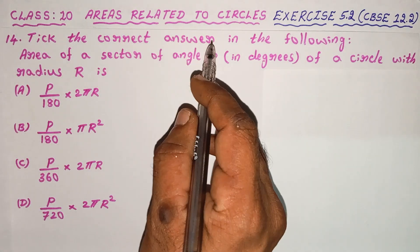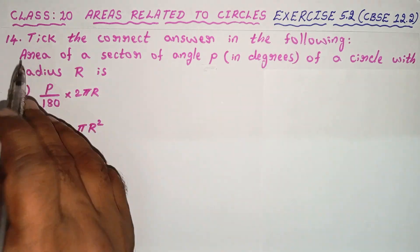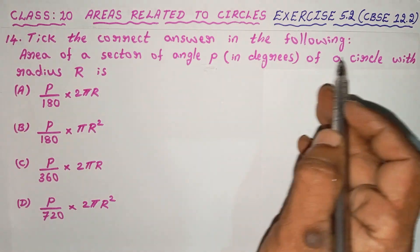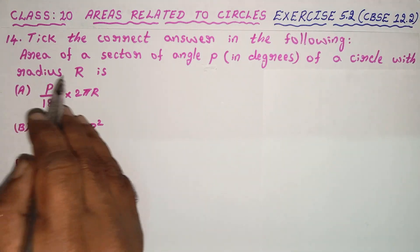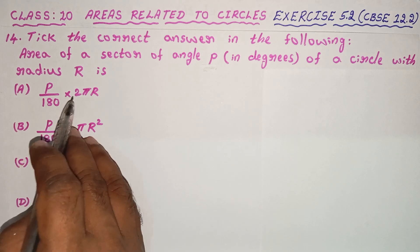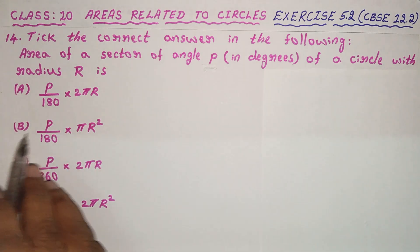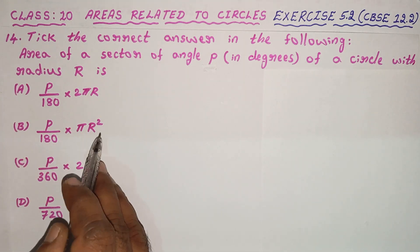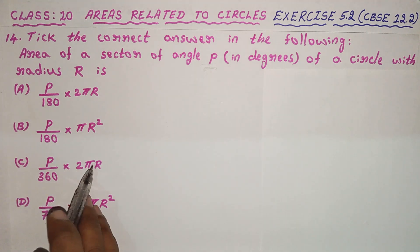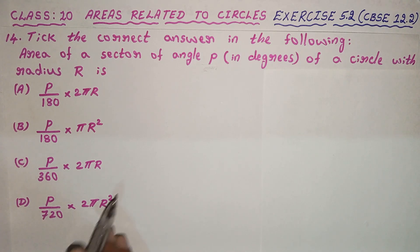Tick the correct answer in the following. Area of a sector of angle P of a circle with radius R is: Option A, P by 180 into 2πR. Option B, P by 180 into πR². Option C, P by 360 into 2πR. Option D, P by 720 into 2πR².